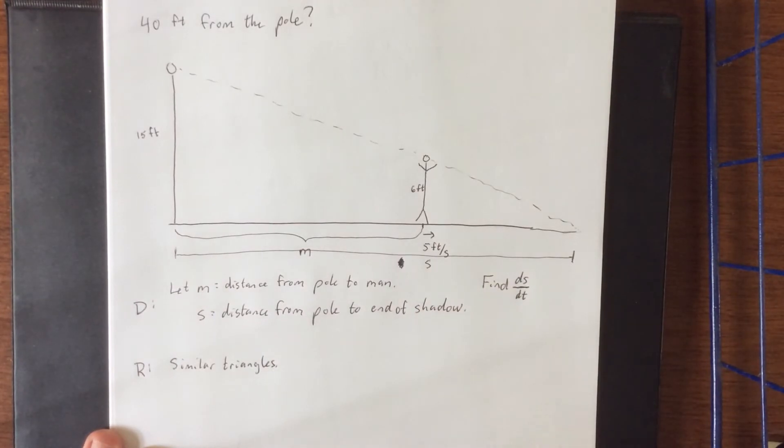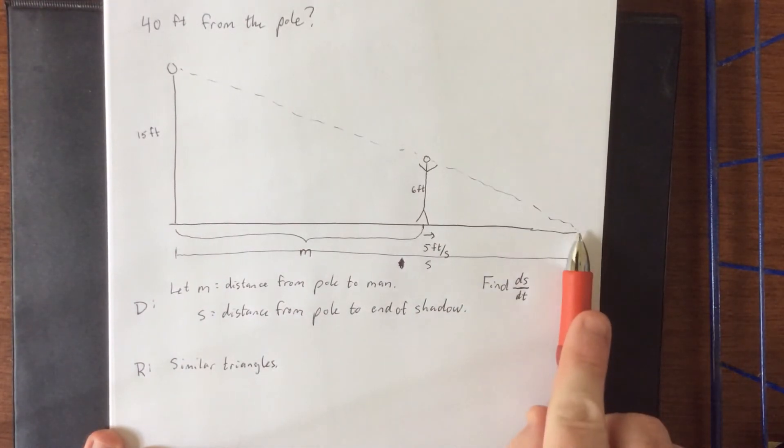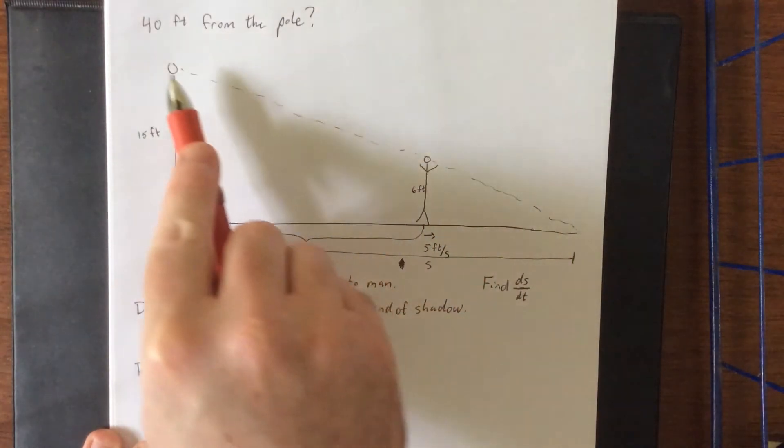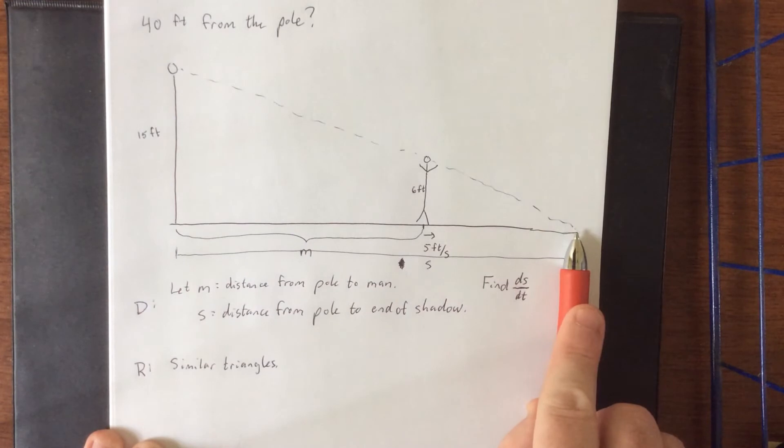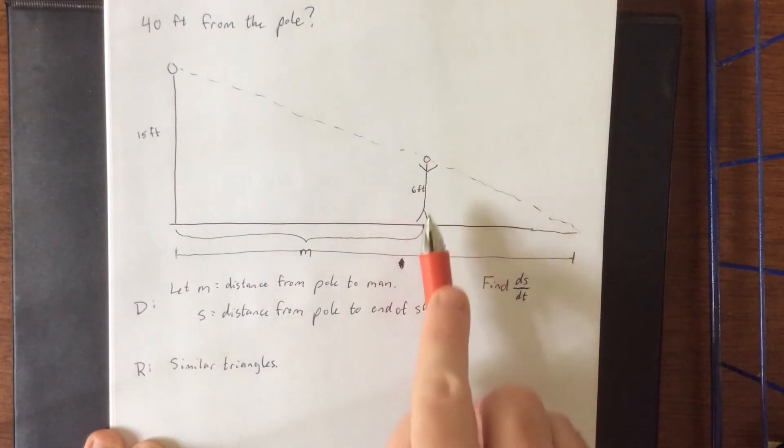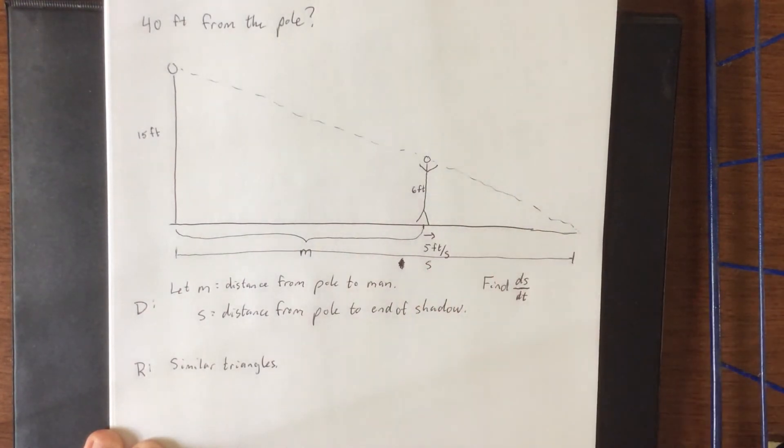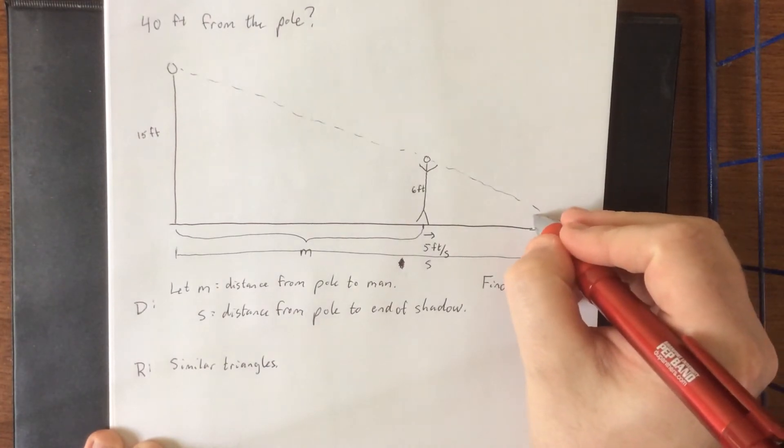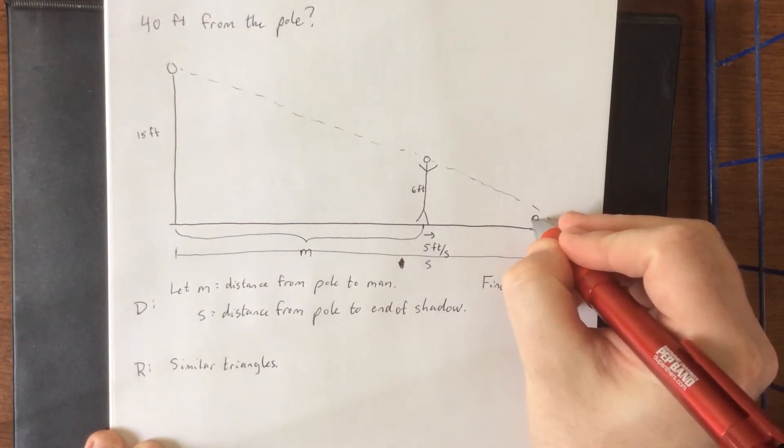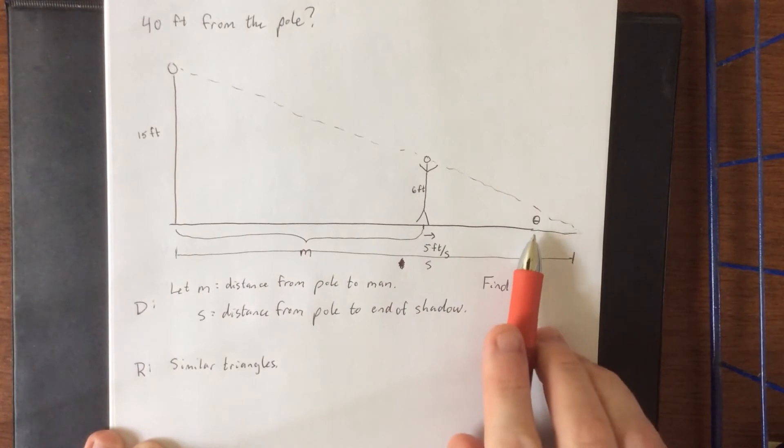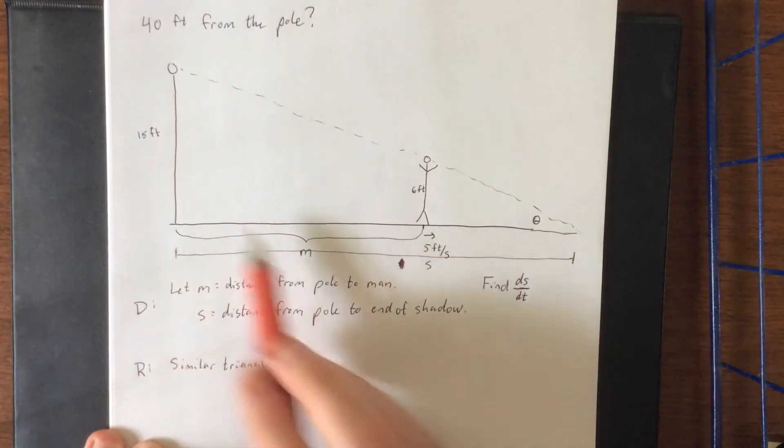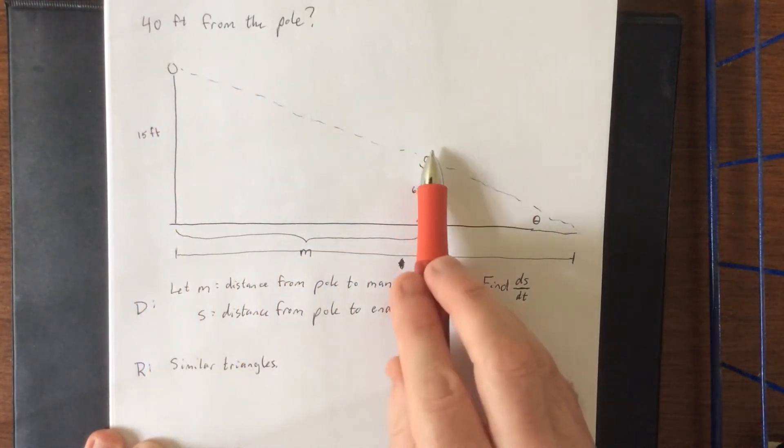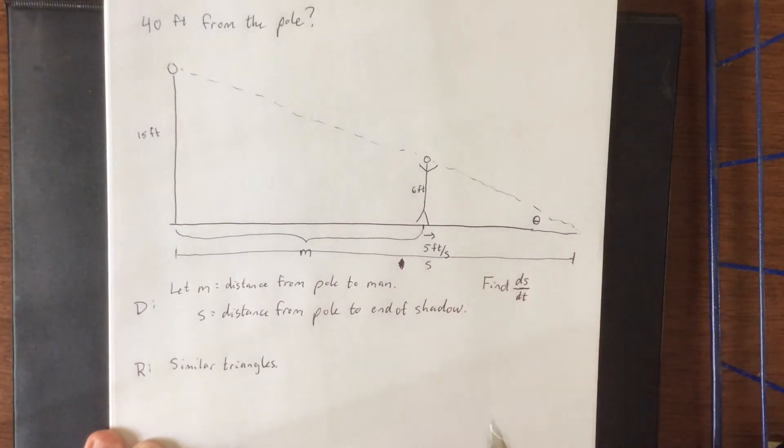So we have two different right triangles that are present in this problem. Starting from this vertex down here, we can do a hypotenuse up to the pole and then down to the ground and then right back. Or we can do a hypotenuse to the top of the man's head, back down to the ground and then over here. Regardless, if you wanted to say similar triangles, that's fine. But the other thing that we could do is use trigonometry and analyze the tangent of this angle.